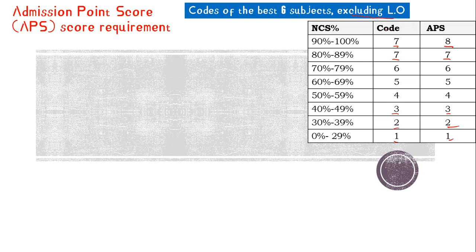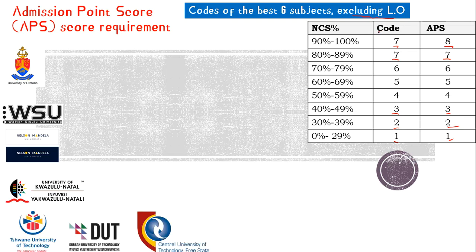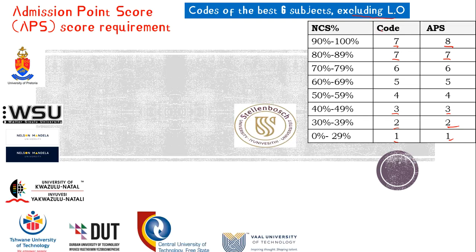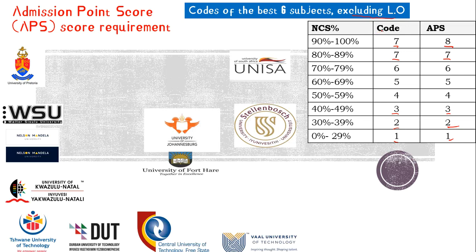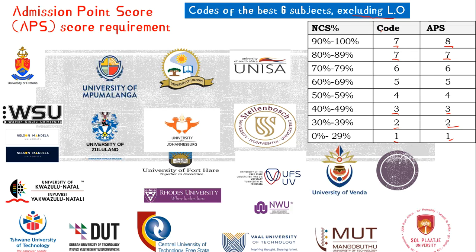Most universities work out the APS score like that. All the universities you see appearing on your screen right now calculate the APS score by simply adding the codes of your best six subjects.